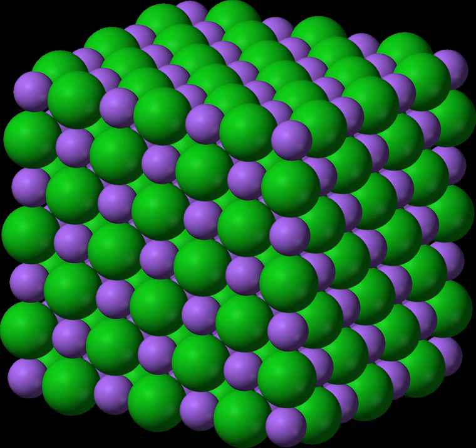For example, FeSO4 is named iron(2+) sulfate with the 2+ charge on the Fe²⁺ ions balancing the 2− charge on the sulfate ion, whereas Fe2(SO4)3 is named iron(3+) sulfate because the two iron ions in each formula unit each have a charge of 3+, to balance the 2− on each of the three sulfate ions.